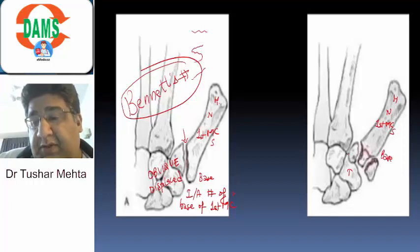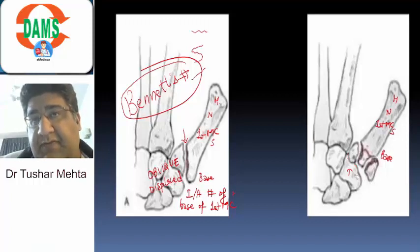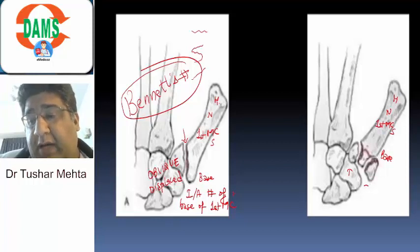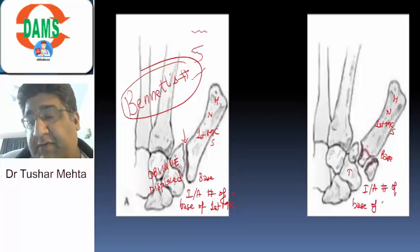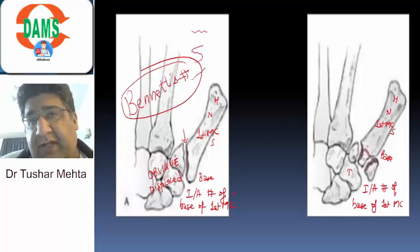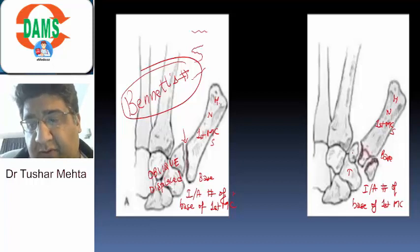This is the trapezio-first metacarpal joint line. Is the fracture line extending into the trapezio-first metacarpal joint? Yes. So, am I going to call this an intra-articular fracture of the base of the first metacarpal just like the previous fracture? Yes. Now, is this fracture oblique? I don't think so. Is this fracture having more than two fragments? I do think so.